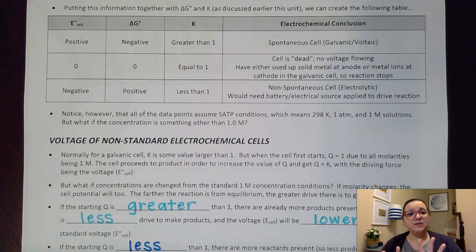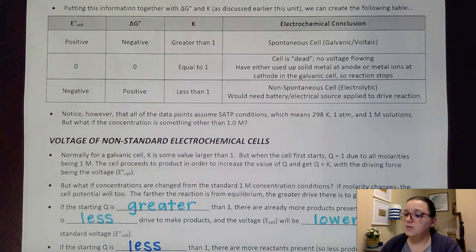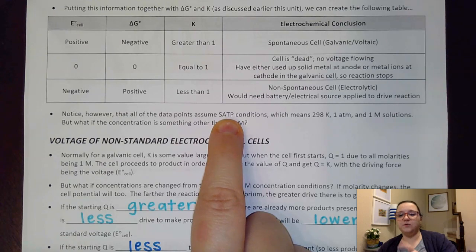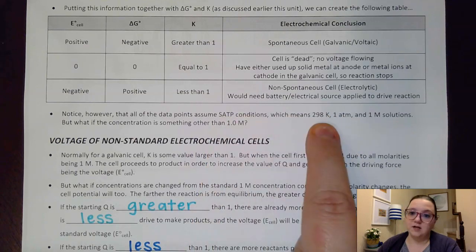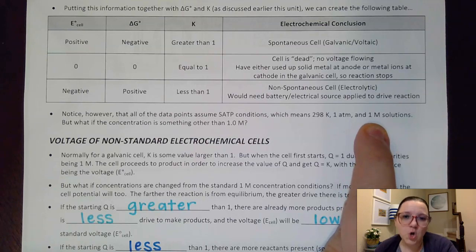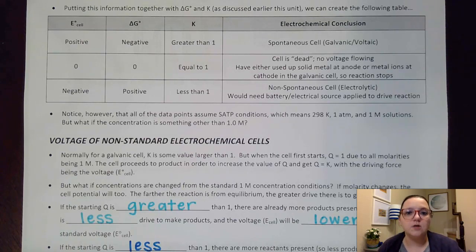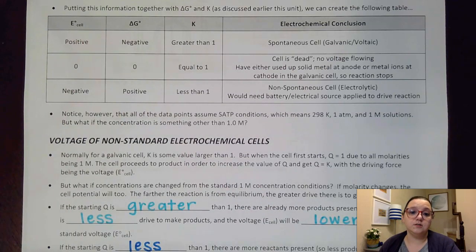Notice those little degree symbols in the table, which means SATP conditions. For electrochemical cells, SATP is not only 298 Kelvin and one atmosphere, but also one molar solutions. So what we're going to talk about is: what if those concentrations are something other than one molar? What would that do to the drive to move electrons, to our cell potential values? Would they be bigger or smaller than the standard values?